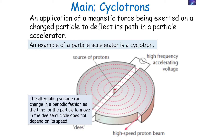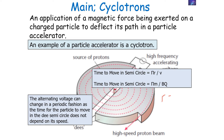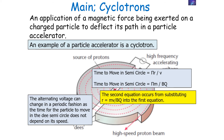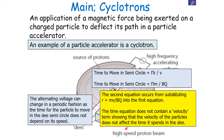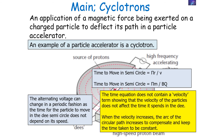The alternating voltage can change in a periodic fashion because the time taken for the particle to move in the D semicircle doesn't depend on its speed. Time to move in a semicircle is distance / speed = πr / v. Substituting r = mv / Bq, the v terms cancel and the time to move in a semicircle is πm / Bq. This equation contains no velocity term, showing that the velocity of the particles does not affect the time spent in the D — when velocity increases, the arc of the circular path increases to compensate, keeping the time constant.